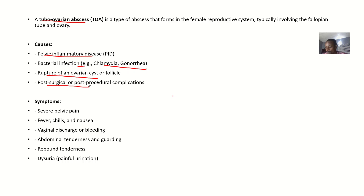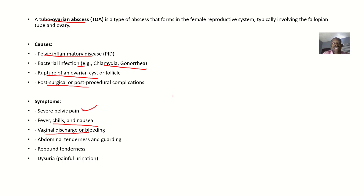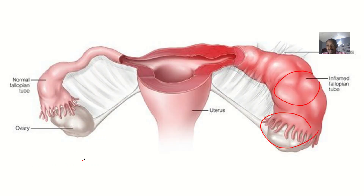The possible symptoms of this condition include severe pelvic pain, fever, chills, and nausea. There will be vaginal discharge and bleeding. There will be abdominal tenderness and guarding, as well as rebound tenderness. There will also be dysuria, which is basically painful urination.